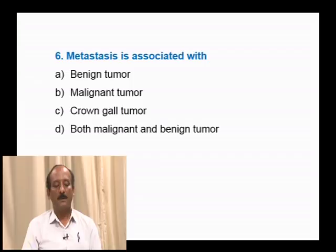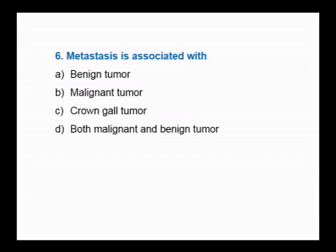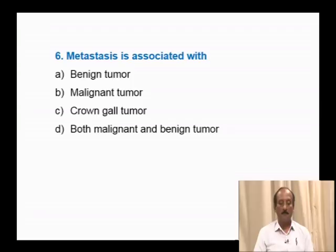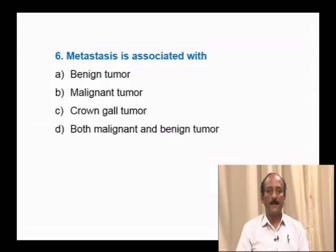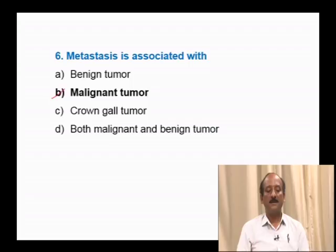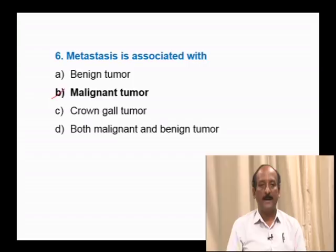Question number 6: Metastasis is associated with — benign tumor, malignant tumor, crown gall tumor, both malignant and benign tumors. Metastasis means the spreading of cancerous cells from one body part to another. It is a characteristic of malignant tumor. The cancerous cells of benign tumor are confined to the site of origin. Crown gall is plant cancer. The correct answer is option B: malignant tumor.